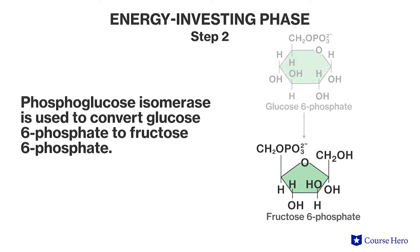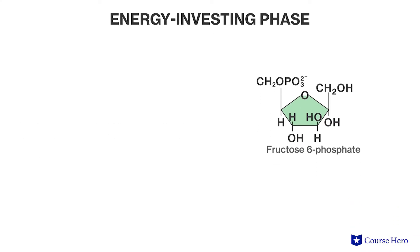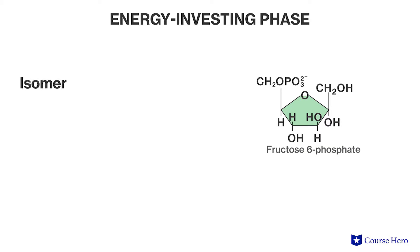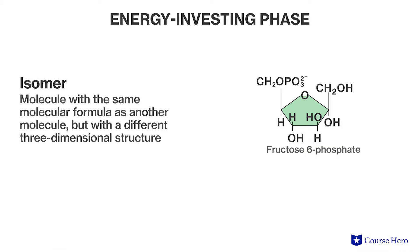Fructose 6-phosphate is an isomer of glucose 6-phosphate, meaning both these molecules have the same molecular formula but have different structures.